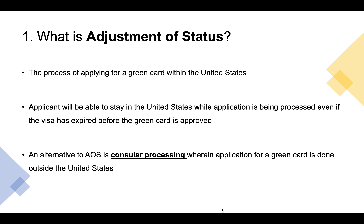What is adjustment of status? The process for applying for a green card from within the United States is called adjustment of status. When you use AOS, you'll be able to stay in the United States while your application is being processed, and even if your visa expires before your green card is approved, you are still allowed to stay in the U.S. The alternative to AOS is consular processing, where you apply for a green card from outside the United States and your green card is processed by your nearest U.S. consulate or embassy. Both AOS and consular processing have their own timelines, application forms, supporting documents, and costs, but the green card eligibility requirements are identical.